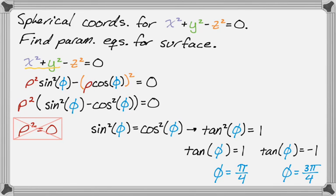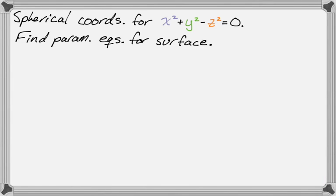All right, so it looks like we have two options for this. And they correspond to the top half and the bottom half. Because remember, phi is the angle with the positive z axis. So let's move on and see if we can write parametric equations.